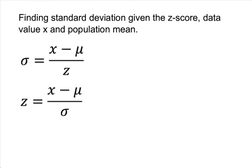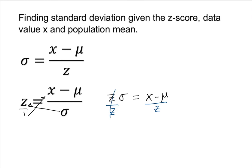Let me actually show you here. Starting from z times standard deviation equals x minus the population mean, we are looking for standard deviation, so we must isolate it by itself. We divide both sides by z — divide by z on both sides — and this cancels. We get standard deviation equals x minus population mean over z. I could have just shifted sigma up there and z here, and we're done. So we just plug values into this formula.